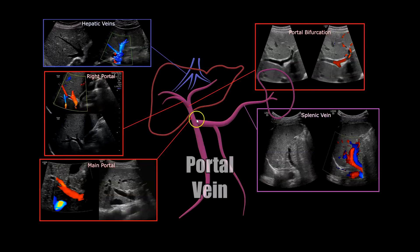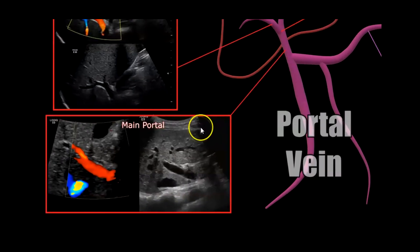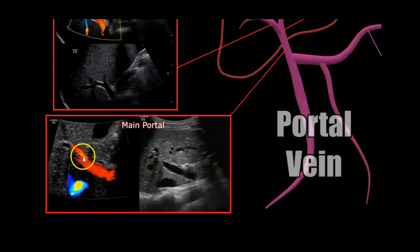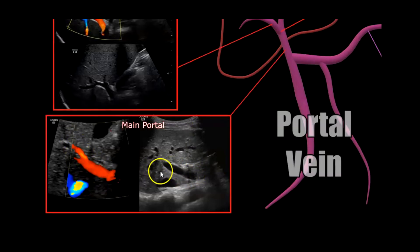So the main portal vein would be right here, and then you have your corresponding ultrasound image. Here's your grayscale image of the main portal vein, and then color Doppler. You can see the blood flow is going towards the liver, which is normal — hepatopetal.